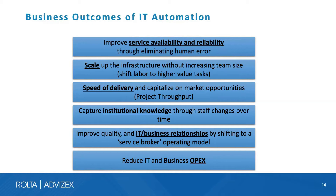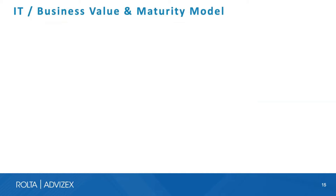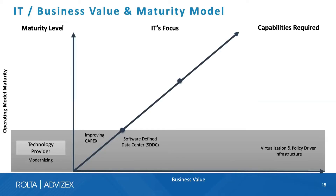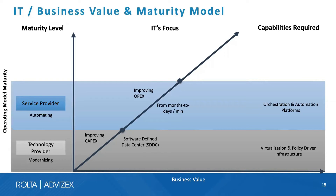We help customers identify where their focus of business outcomes lies using an IT-to-business value maturity model — a continuum of three levels of maturity. The first level, the technology provider level, is the basic IT organization that may be modernizing its capabilities, focusing on improving CapEx through virtualization and the software-defined data center. By virtualizing infrastructure, you enable policy-driven infrastructure, though you may not yet have the maturity to fully execute on that concept.